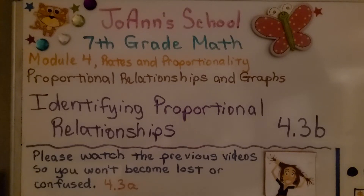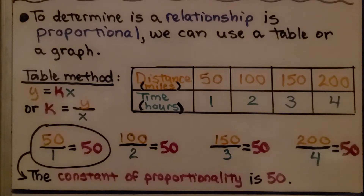Lesson 4.3b: Identifying Proportional Relationships. To determine if a relationship is proportional, we can use a table or graph. Here's the table method.